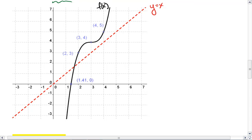So since for f of x we have the ordered pair 1.41, 0, that means the inverse will have the ordered pair 0, 1.41. The original function has the ordered pair 2, 3, so the inverse has the ordered pair 3, 2. We have 3, 4, so the inverse is 4, 3. And 4, 5 means we have 5, 4.